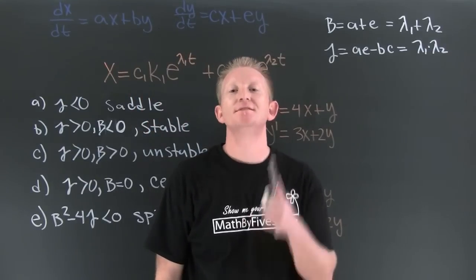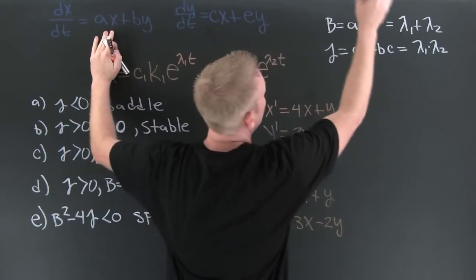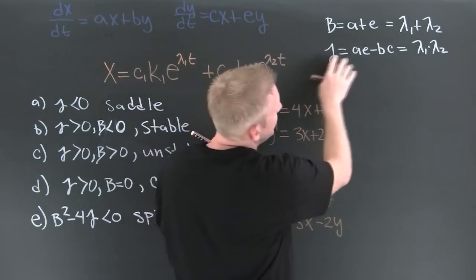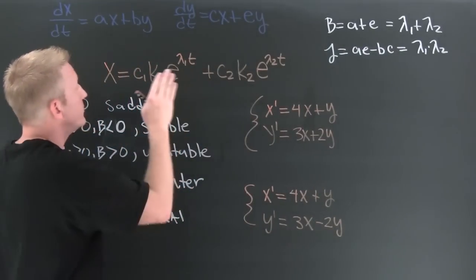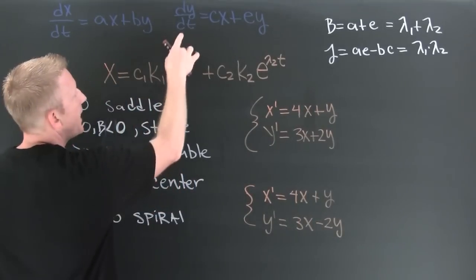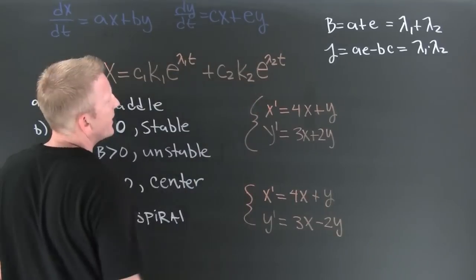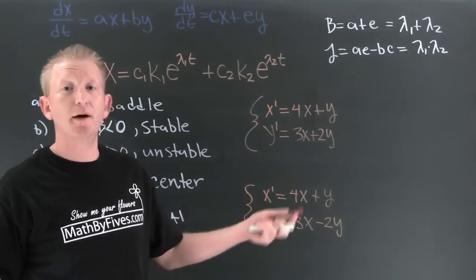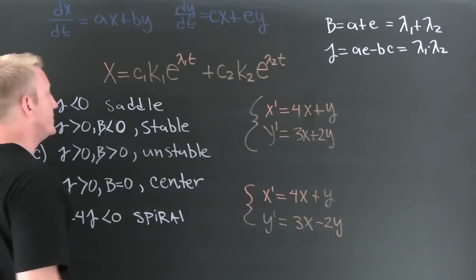We've now got enough background information to talk about what this test is really doing. I know that beta is the trace and it's the sum of the eigenvalues, and that gamma is the determinant and that's the product of the eigenvalues. In a two by two, my general solution is c1 times eigenvector one times e to the eigenvalue-one t, plus c2 times the second eigenvector times e to the eigenvalue-two t. It's all about the big t's, the big e's — it's all about the exponents.